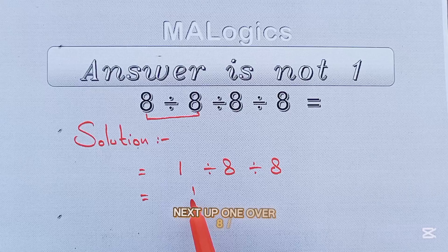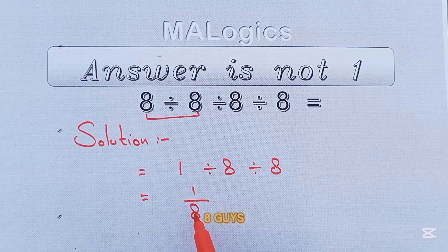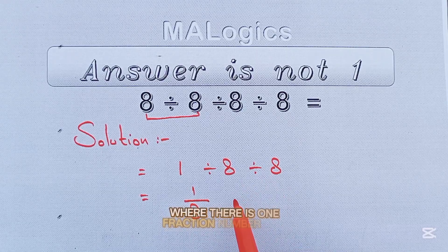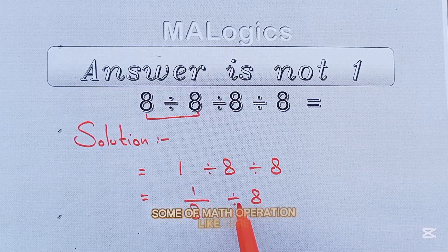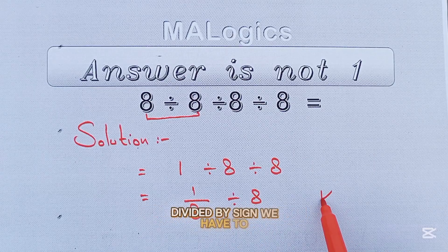Next up, 1 over 8 divided by 8. Guys, in this condition, where there is one fraction number and another is a real number, and in between them there is some math operation, like here divided by sign.